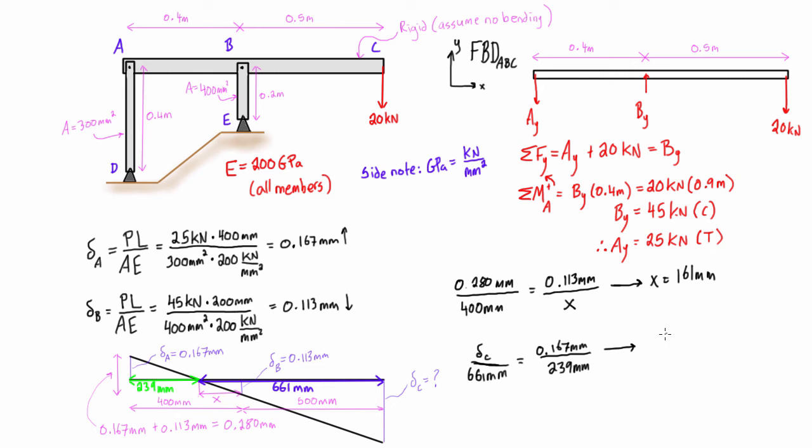And if we just do our cross multiplication there and solve for the displacement at C, we're going to find that we get 0.462 millimeters in the downward direction. So there we go.